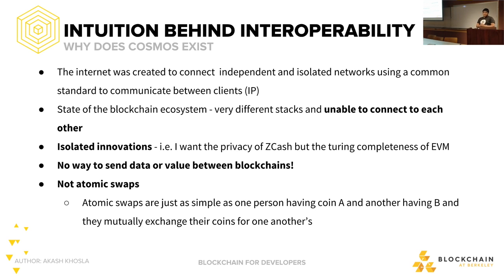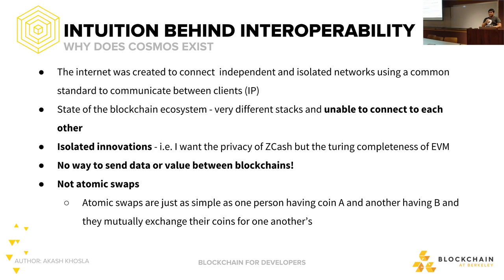Just how the internet basically came up: before the internet, we had a bunch of isolated servers and networks in different parts of the country. MIT would have its own network, Berkeley would have its own, DARPA would have its own. These things were not really talking to each other. The internet was basically a way of creating a common protocol and common stack to get all of these differing networks to talk to each other.